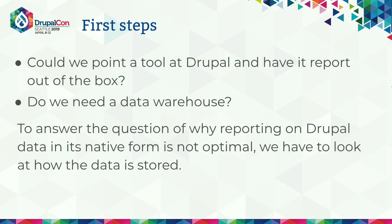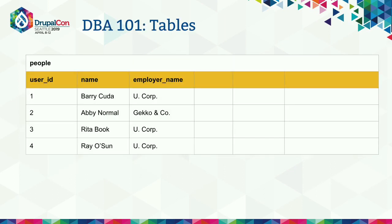With all that in mind, we needed to pick our products. The first questions we had were: could we point a tool at Drupal and have it report as-is out of the box? And did we even need a data warehouse? To answer why reporting on Drupal out of the box is not optimal, we have to look at how data is stored. In SQL 101, you'd make a table of people and their employer — a field for user ID, name, and employer. It works, but certain bits of data are duplicated across rows, and you'd have to manually update records or do a textual find-and-replace to update a company name for all affected users.